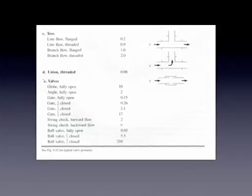Tees, notice there's a difference between line flow and branch flow. Line flow, the fluid is going past an opening and just going past it, whereas branch flow, it's taking a 90 degree turn and going down a branch.